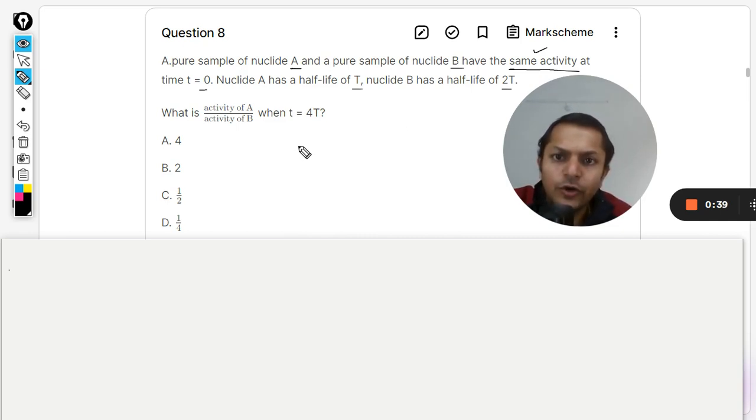So the activity is written like this: activity A is written by negative dN/dt. You might be remembering in the case of radioactive decay law we studied that negative dN/dt is equal to lambda N, or directly proportional to N.